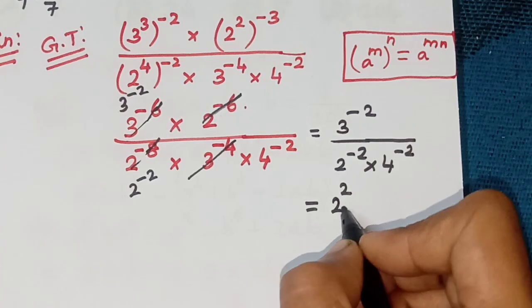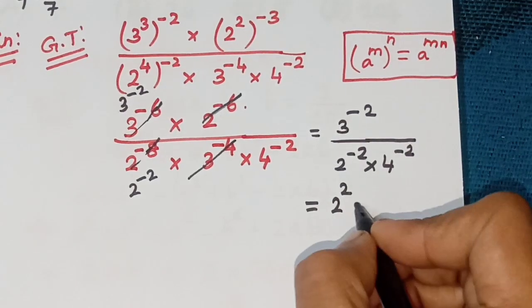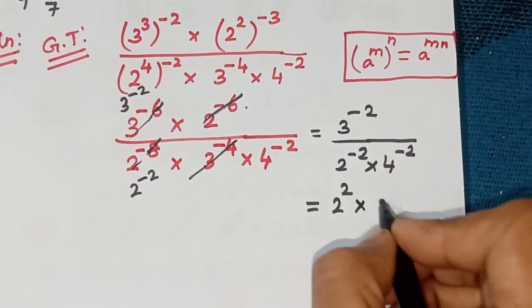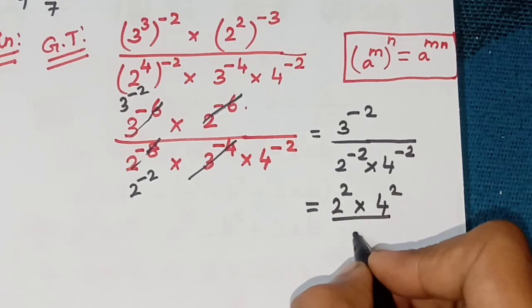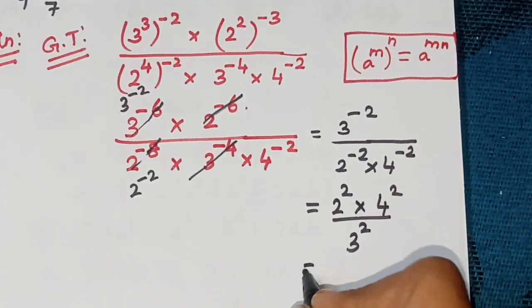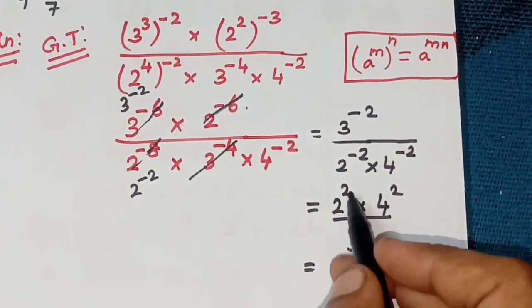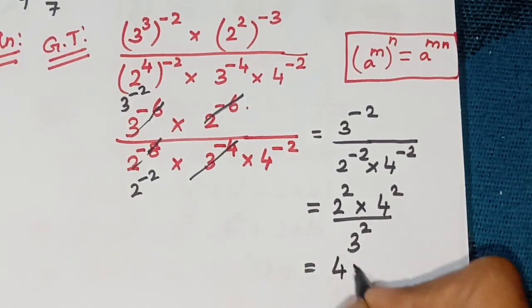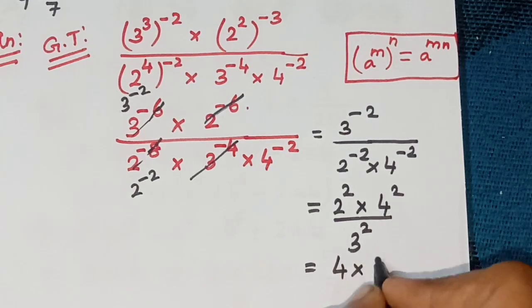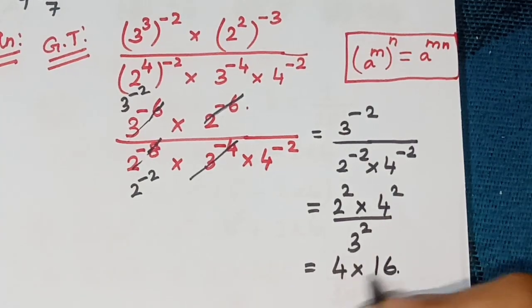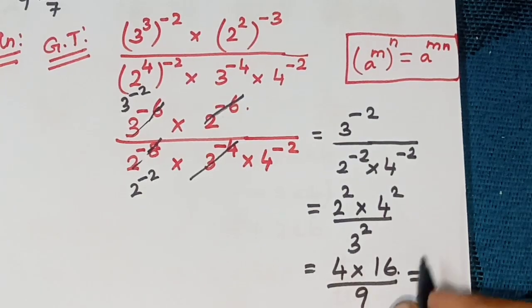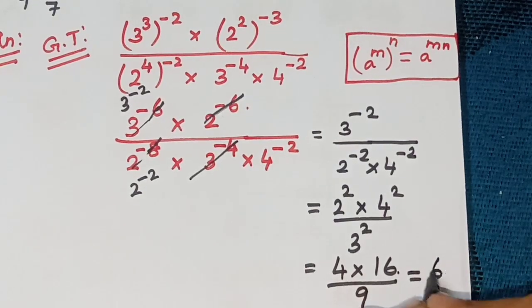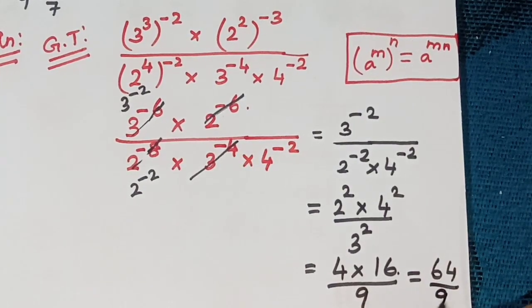Taking reciprocals of the negative powers: 2 squared × 4 squared divided by 3 squared. That gives 4 × 16 divided by 9, which is 64 divided by 9.